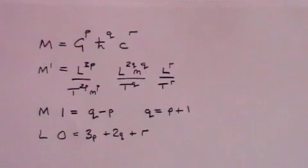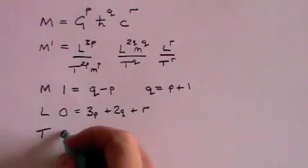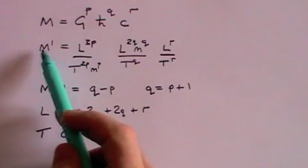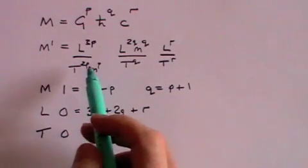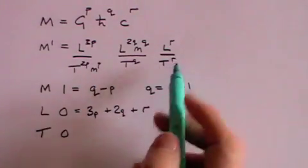Now let's have a look at time. And again there is no time term on this side of the equation, but on this side we've got 2P plus Q plus R.